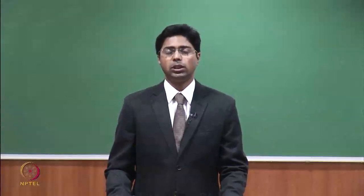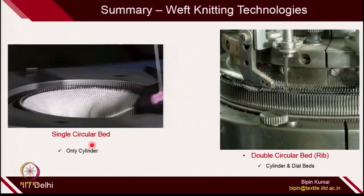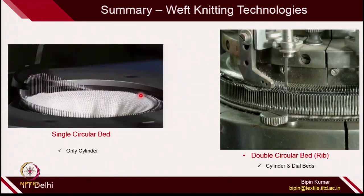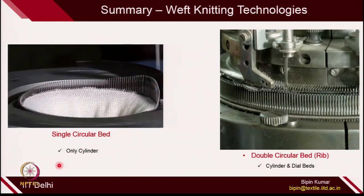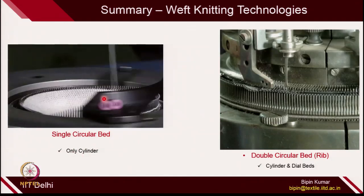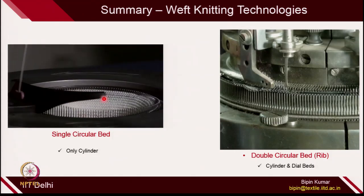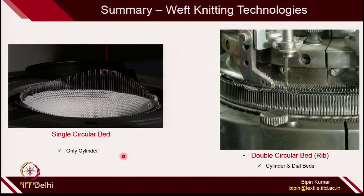In circular knitting, you have single circular bed where needles are arranged in 1 cylinder, doing reciprocation in the vertical direction — going up, catching the yarn and going down. In single circular bed, there is just 1 cylinder. You have also seen the additional element called the sinker, which plays a very important role, especially in single circular bed knitting — in fabric catching, holding, and loop pulling. So sinker, apart from needle, also has a crucial role to play.